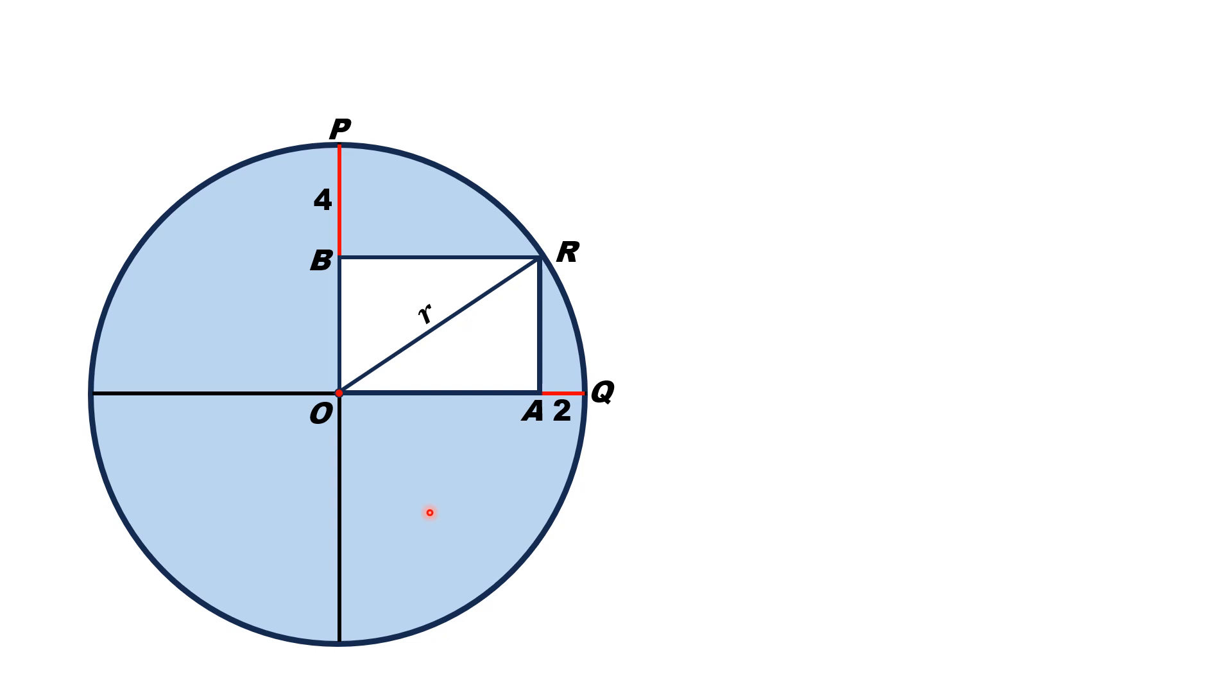Then OA is equal to r minus 2, and OB is equal to r minus 4. Let we focus on this right triangle OAR, in which the 90-degree angle is at point A.